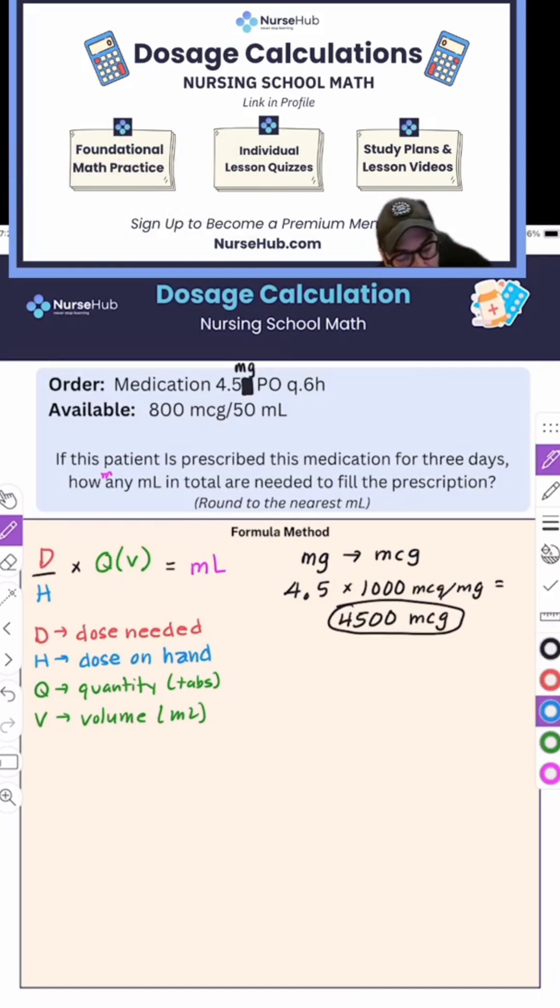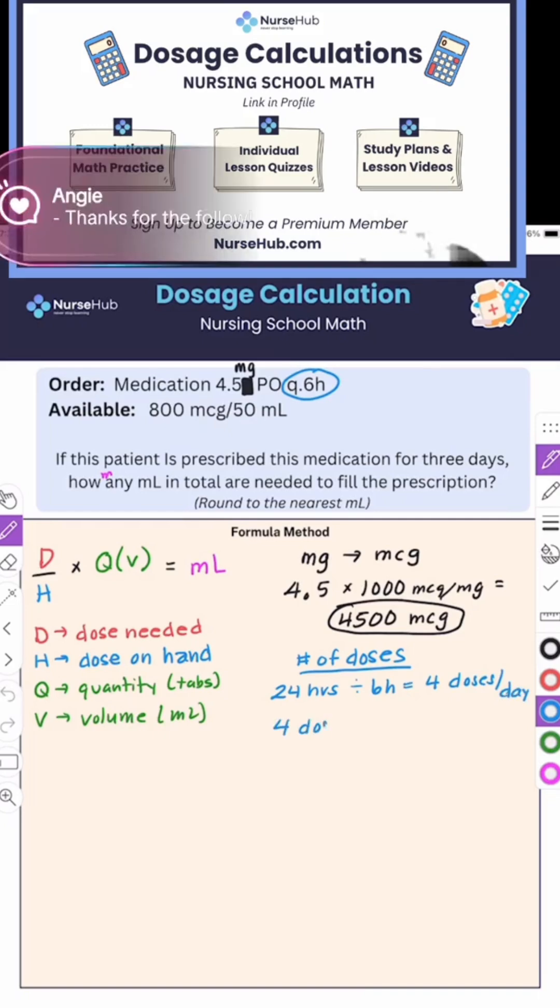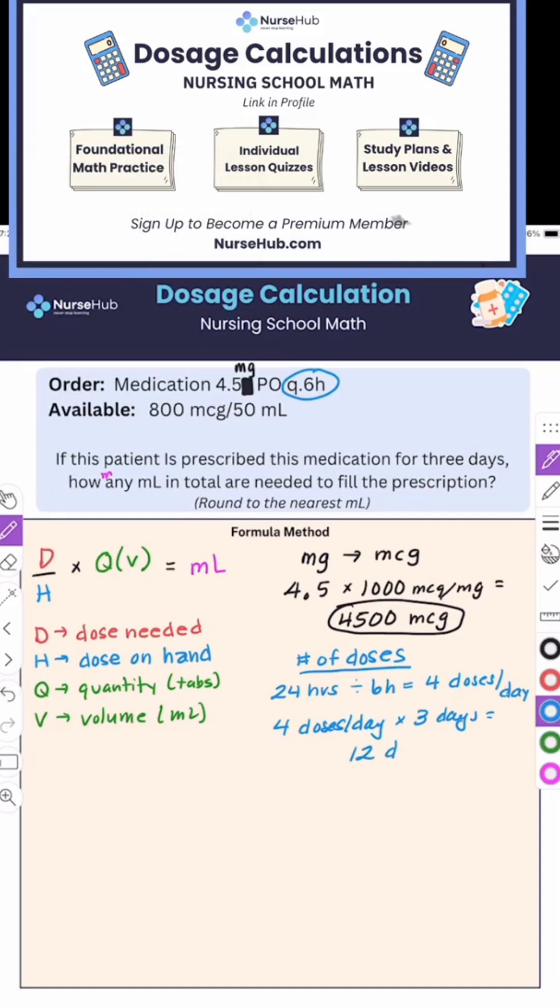We also then need to look at our number of doses. That's going to be 24 hours divided by six hours, which means there's four doses per day. So four doses per day times three days gives us 12 doses.